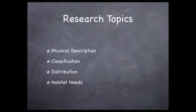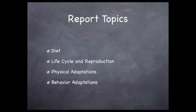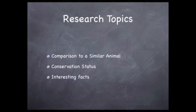Here are the topics that will guide us when doing our research. Think of them as questions to be answered about the animal being researched. We'll need a physical description, the animal's classification, its distribution, and its habitat needs, its diet, life cycle, and reproduction, physical adaptations, and behavior adaptations. Comparison to a similar animal and the animal's conservation status will also add interesting facts.